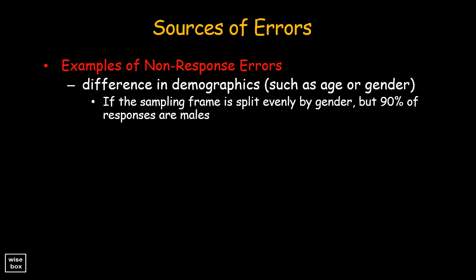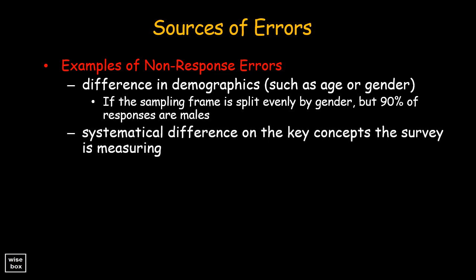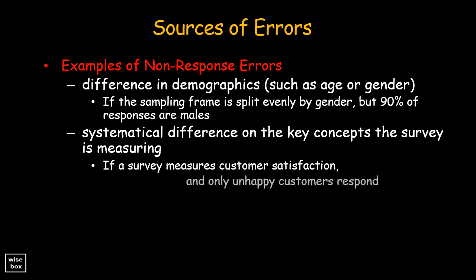It occurs when survey responders are systematically different than non-responders on the key concepts the survey is measuring. For example, if a survey intends to measure customer satisfaction and only unhappy customers respond to the survey, the results will not reflect the opinions of all customers.